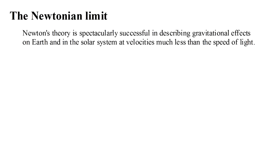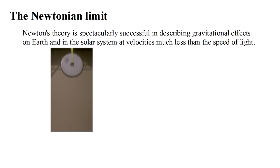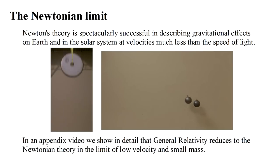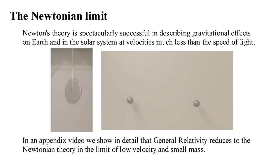Another point to keep in mind is that Newton's theory is spectacularly successful in describing gravitational effects on Earth's surface and in the solar system, at least for objects traveling at much less than the speed of light. A mass bouncing on a spring and a pendulum are just two examples. Clearly then, if Einstein's theory is correct, it must reduce to and agree with Newton's theory in the limit of low velocity and small masses. In an appendix video, we show that this is indeed the case.